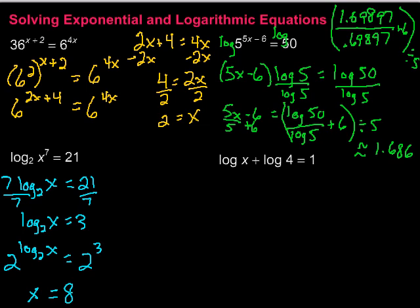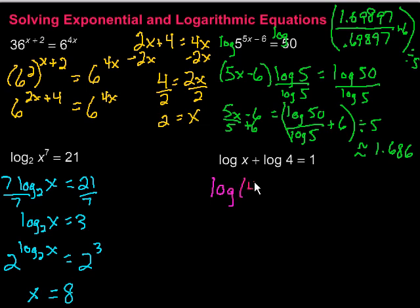Sometimes we can do some simplification before working with the logarithms. In this case, we have 2 logarithms with the same base that are being added. From our properties of logarithms, when two logs with the same base are added, we multiply those numbers. So it gives us log of 4x equals 1.